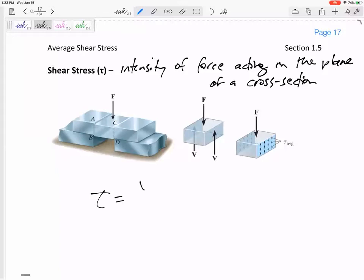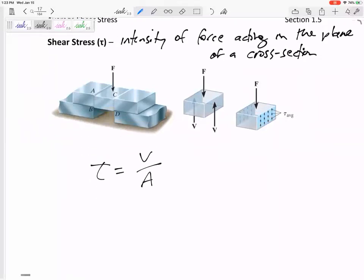Tau would be V over A. Let's box this in, and let's actually specify this is tau average.